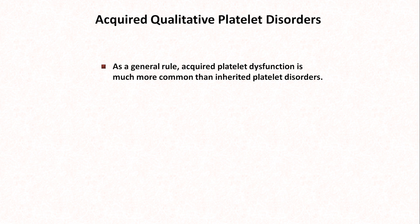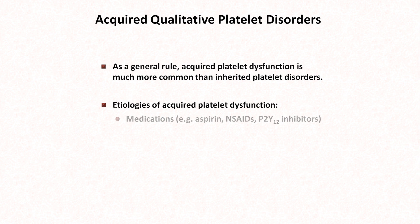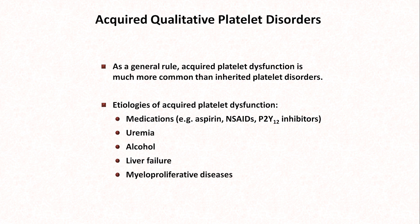Moving on to the qualitative platelet disorders: unlike problems directly with von Willebrand factor, in which inherited disorders were much more common than acquired ones, acquired platelet dysfunction is much more common than inherited forms. Etiologies of acquired platelet dysfunction include medications such as aspirin, NSAIDs, and P2Y12 inhibitors, uremia, alcohol, liver failure, myeloproliferative diseases, and cardiopulmonary bypass. Excluding medications — in which platelet dysfunction is usually the goal and not a side effect — uremia is the most common cause of clinically relevant platelet dysfunction.